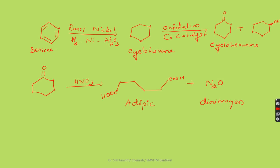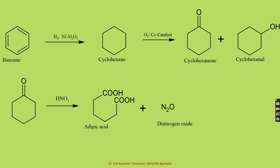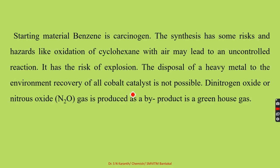Benzene undergoes reduction in the presence of Raney Nickel forming cyclohexane, which on oxidation gives cyclohexanol and cyclohexanone. Cyclohexanone further undergoes oxidation to produce adipic acid, with formation of dinitrogen oxide. The dinitrogen oxide — or nitrous oxide — is a byproduct and a greenhouse gas. The starting material, benzene, is carcinogenic in nature.